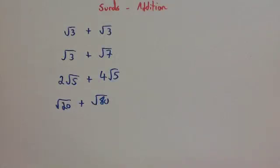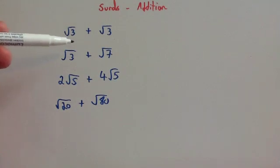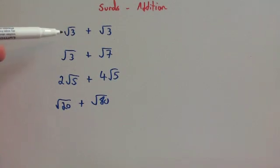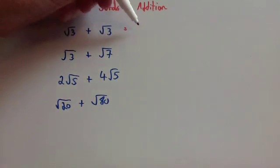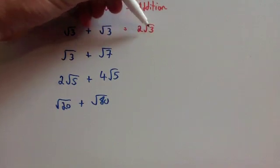In this video on surds we're going to look at how to add surds. So if you have root 3 plus root 3, you're going to have two lots of root 3, so that's going to be equal to 2 root 3.